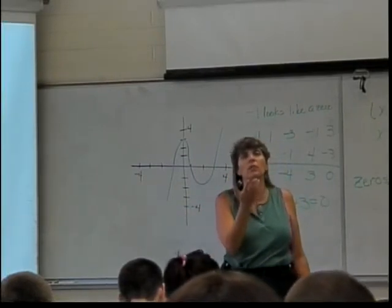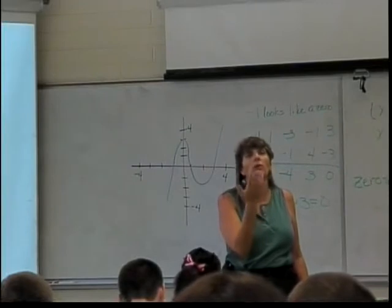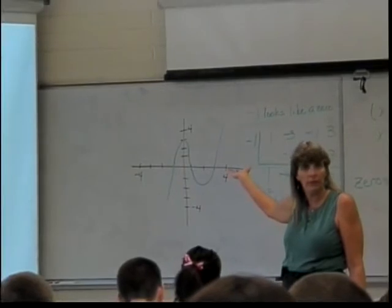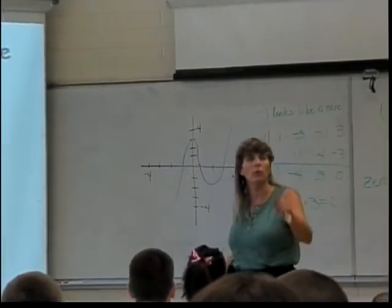And what will finally happen in the end is you will get a problem where you'll only be able to see 1 on the graph. Because the other 2 will be complex. And that will be why you would need your quadratic formula.